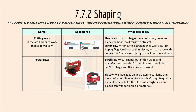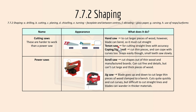Then we have cutting saws, which are harder to work with than a power saw. We have hand saws like a tenon saw or a coping saw. A hand saw is used to cut larger pieces of wood; however, the blade can bend, so it must cut straight. A tenon saw is used for cutting straight lines with accuracy. A coping saw is used to cut thin pieces and can cope with curves too.